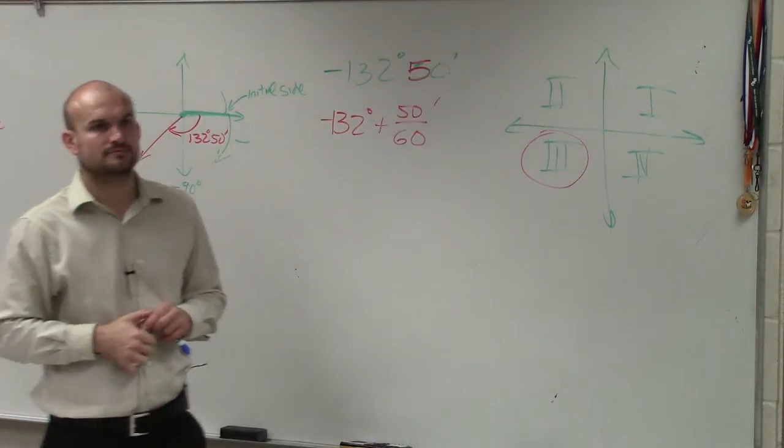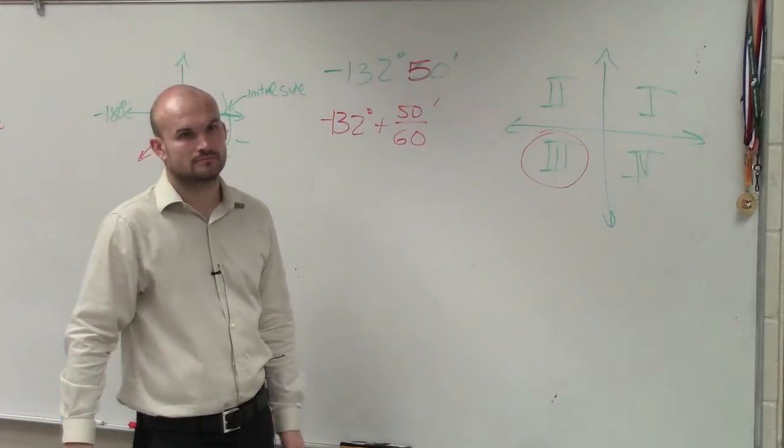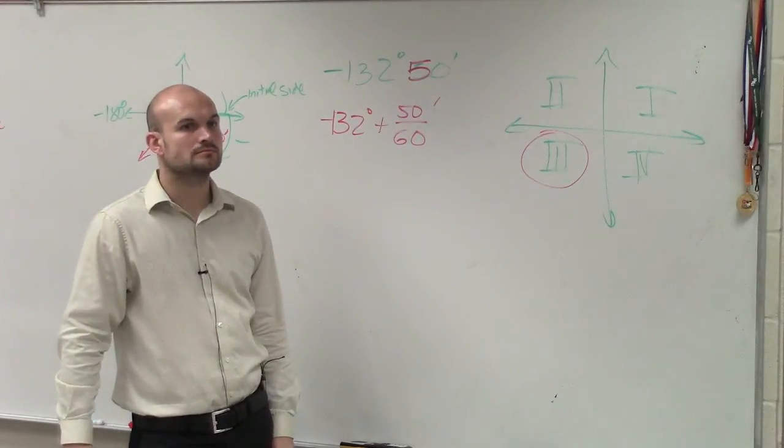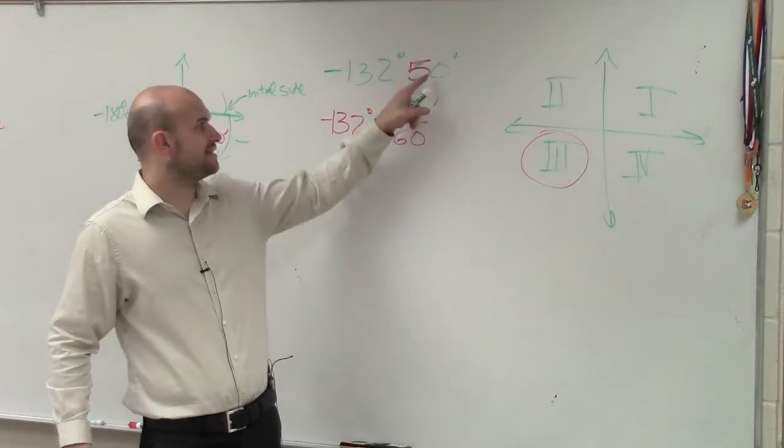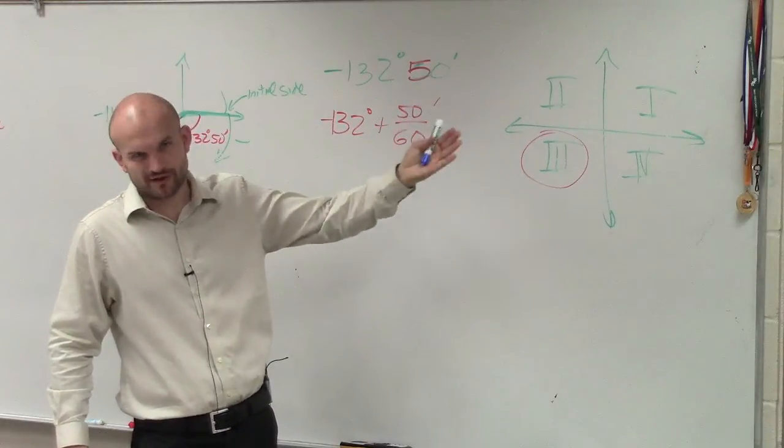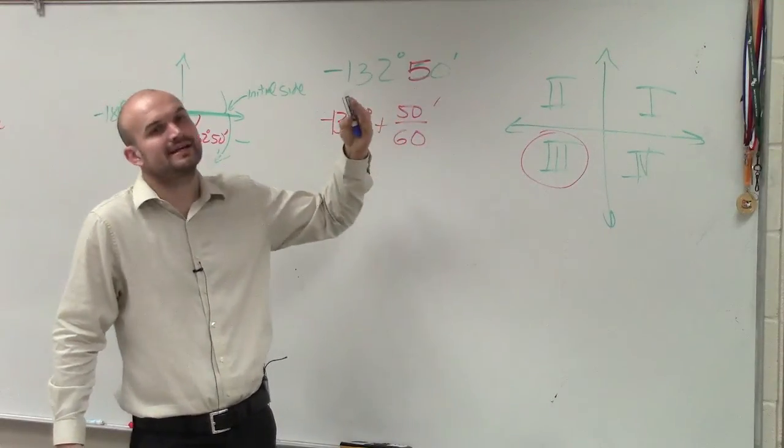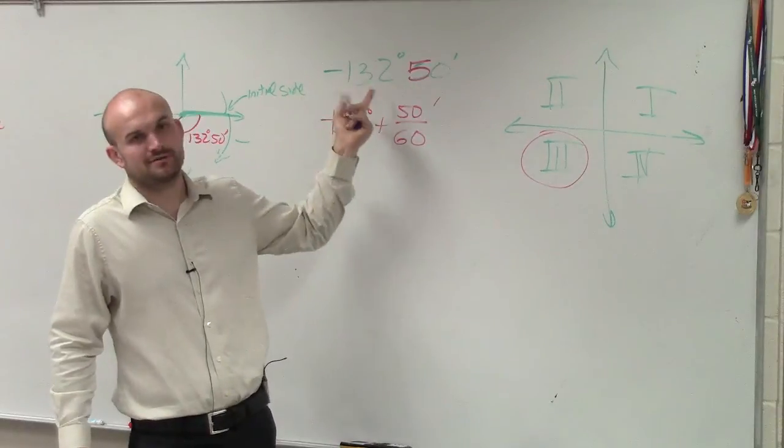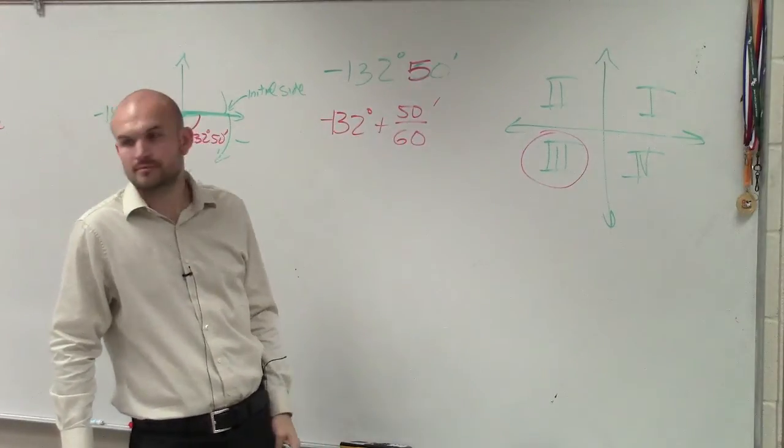So what you did there, you just basically logically thought how 5/6 isn't going to add a big, huge number. Yeah, because that's 50 minutes. Remember, there's 60 minutes in one degree. So we're talking about adding less than a degree to 132. That's not going to move it out of the third quadrant.